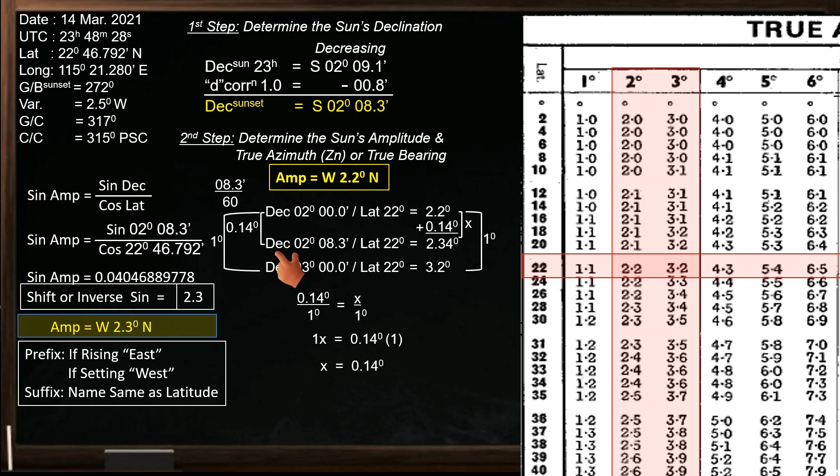So the amplitude at declination 2 degrees, 8.3 minutes, and latitude 22 degrees is 2.34 degrees. If we round it off to 1 decimal place, the sun's amplitude using an amplitude table with interpolation is west 2.3 degrees north. We got the same amplitude value using the previous method.